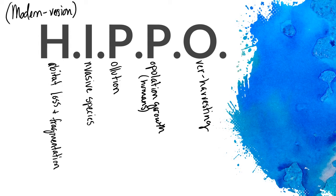Historic causes of extinction include sea level rise or drop, changes in atmospheric CO2 and other gases, changes in ocean chemistry, volcanism, and movements of tectonic plates — large-scale geologic processes contributing to global changes. This modern version is all associated with human activity, and we're going to look at how these human drivers are working toward the modern extinction we're seeing.